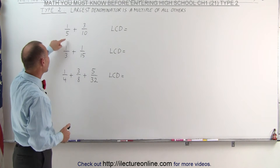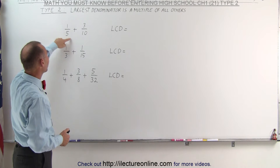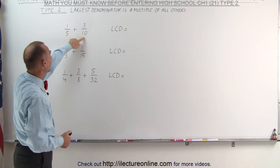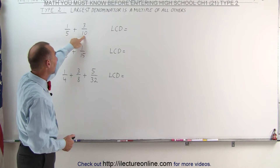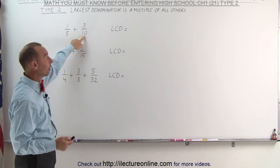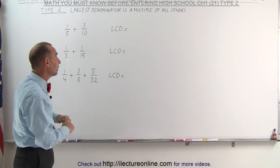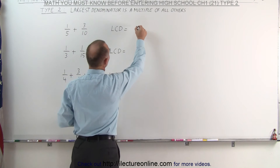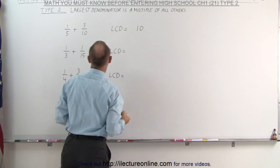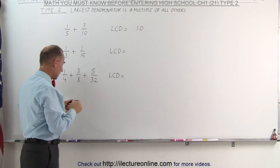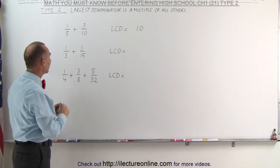Here we have an example: 1 fifth plus 3 tenths. 5 goes evenly into 10, 10 being the largest denominator. Therefore, the LCD — the lowest common denominator — is simply equal to 10.